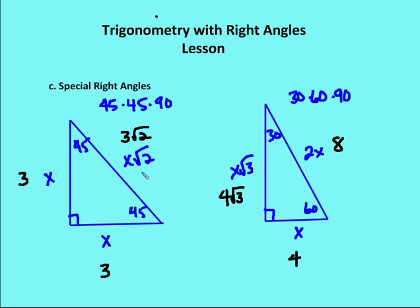It's always important in figuring out these triangles — both 45-45-90 and 30-60-90 — to really start with the reference side. In the 30-60-90 case that's the side opposite the 30-degree angle, and in the 45-45-90 case it's the side opposite the 45-degree angle.